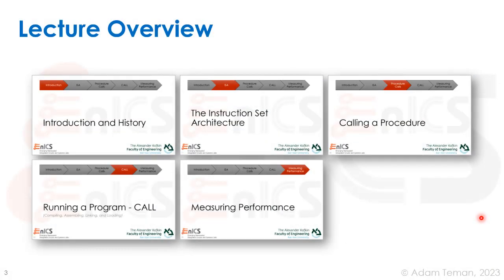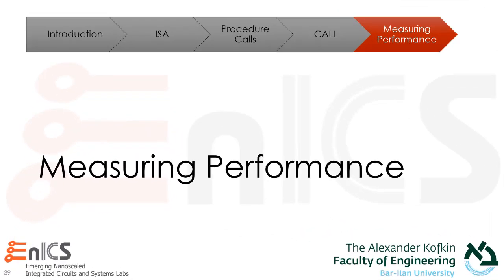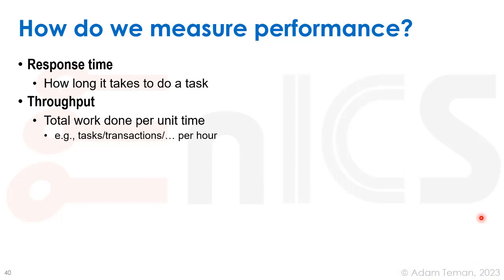For a final point in this lecture, I'm going to discuss briefly how we measure performance of one of these microprocessors. There are two main metrics we should look at: one is response time, which means how long does it take to do a task — what is the latency. The other is throughput, which is the total work done per unit time — how many tasks or transactions are finished per hour, minute, or second.